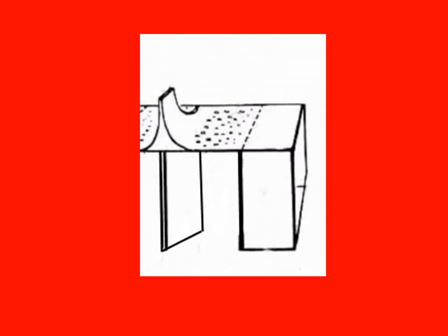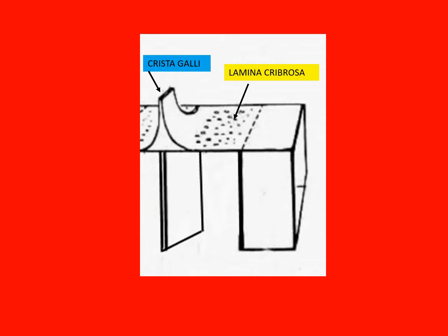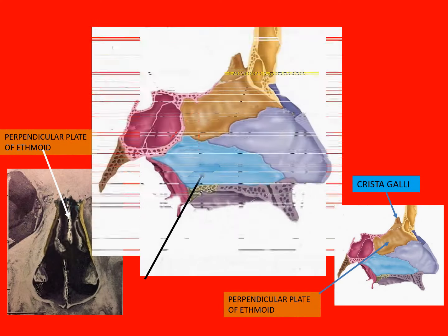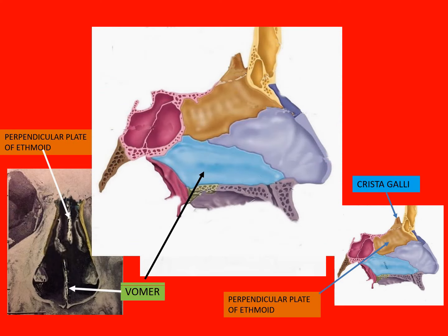Between the two laminae cribrosae, there is in front a superiorly pointing spur, the crista galli. Across from the crista, running along the entire length between the two cribrosae and at right angles to it, is the perpendicular plate of ethmoid. The perpendicular plate is part of the bony nasal septum. The vomer, an independent bone, forms the other part.